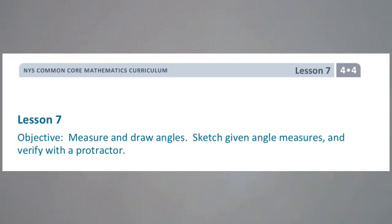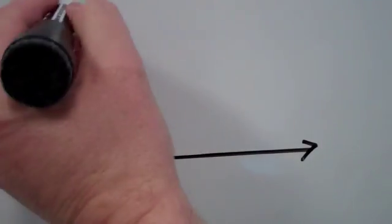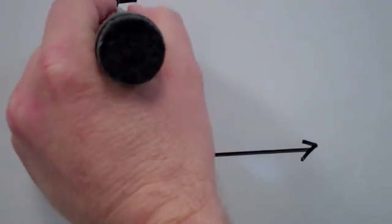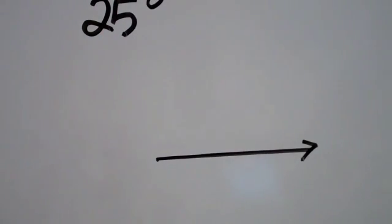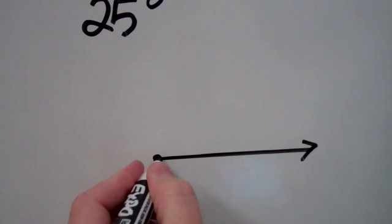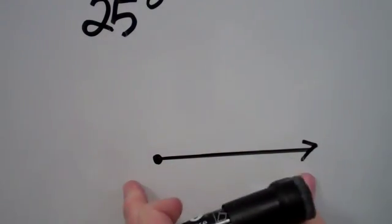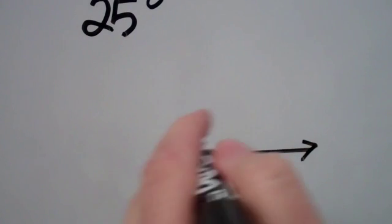Let's say we've got a ray right here and we're being told to draw a 25-degree angle. We're going to use this as our vertex, the corner of the angle. Vertex is the proper word for that.